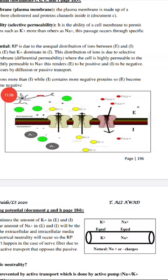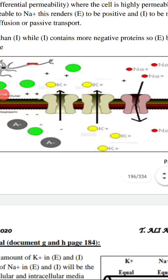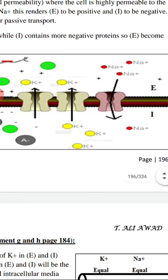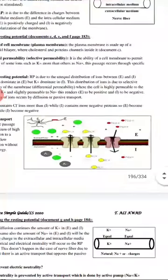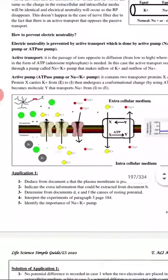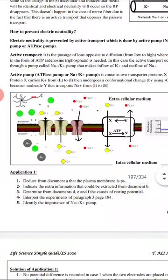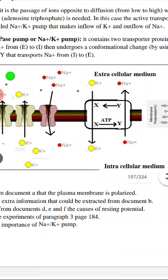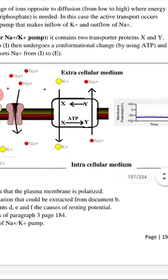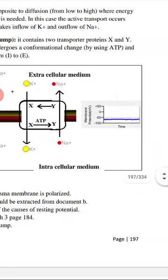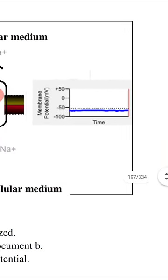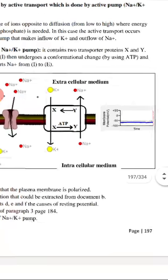As you can see, K+ exits in large numbers to the outside and Na+ enters to the inside by diffusion — this is passive transport. Then the pump's role comes in, and together this creates a potential difference called the resting potential of minus 70 millivolts.